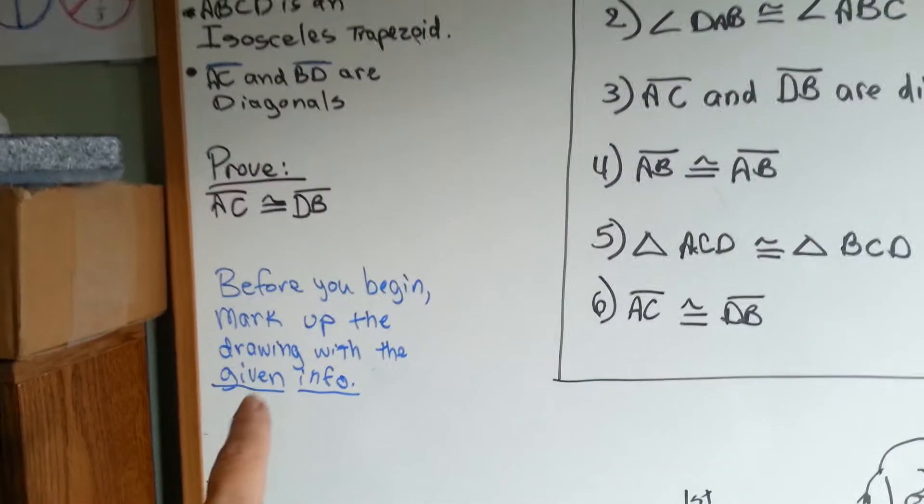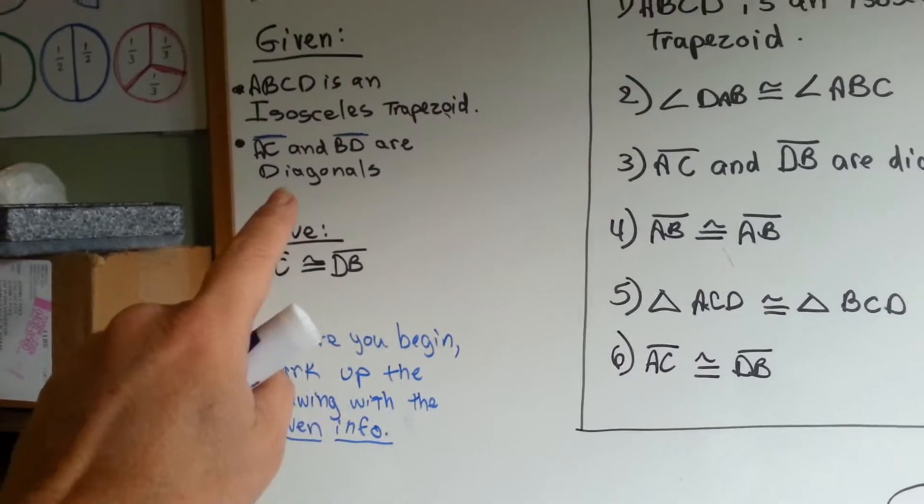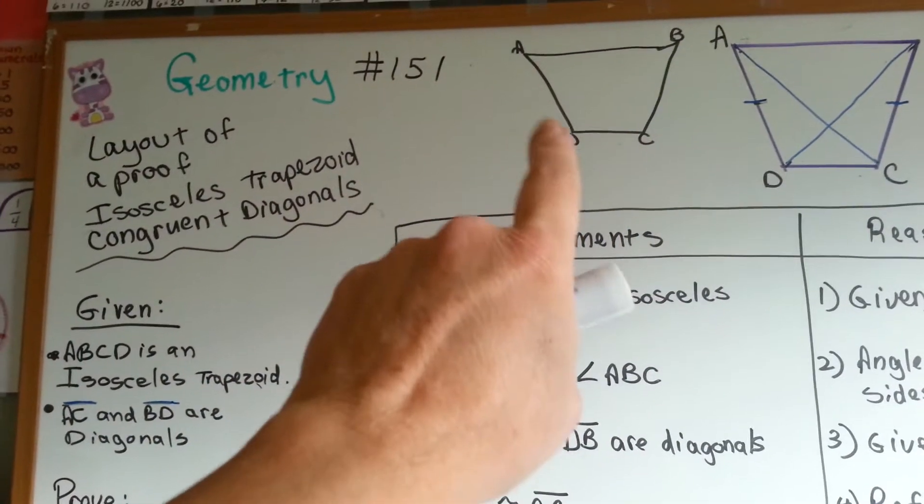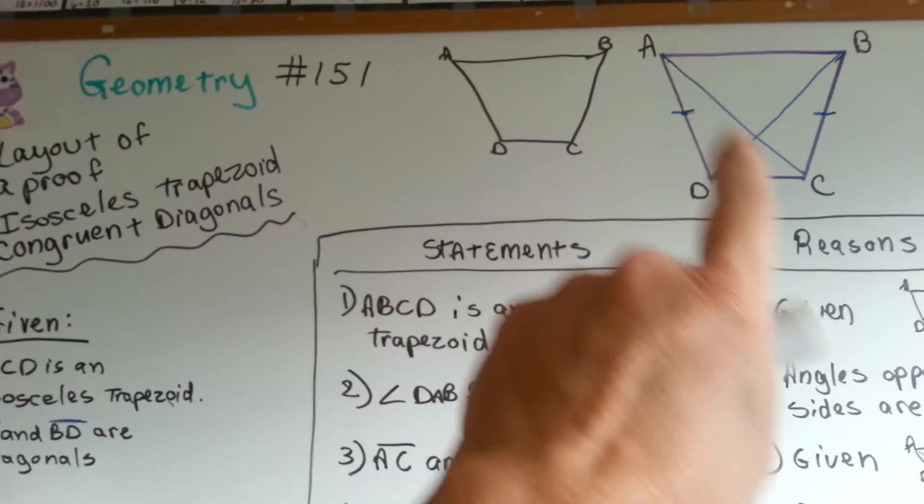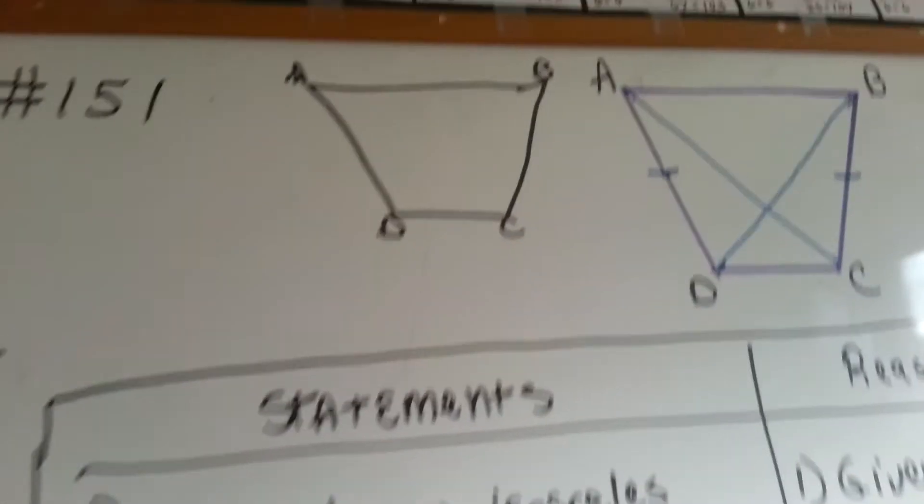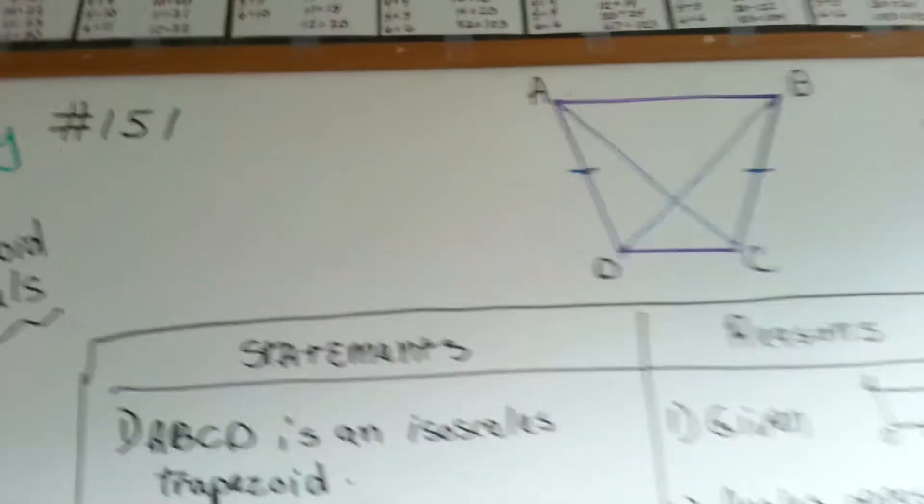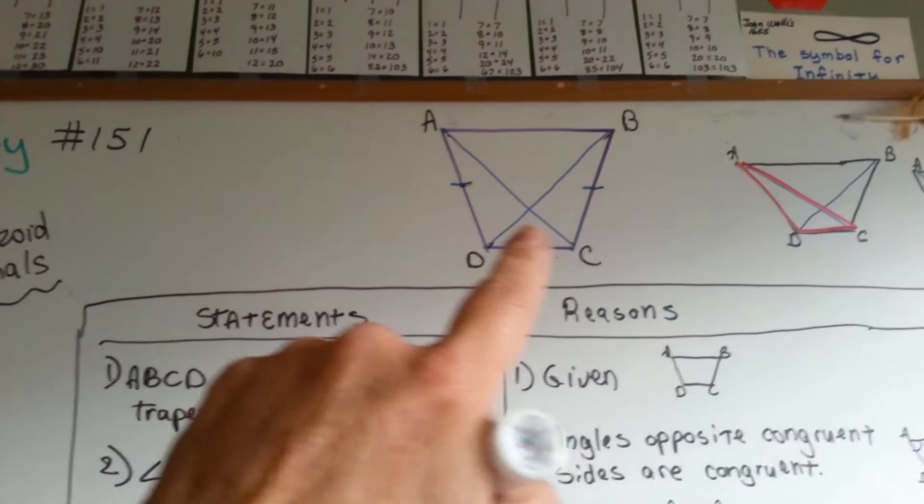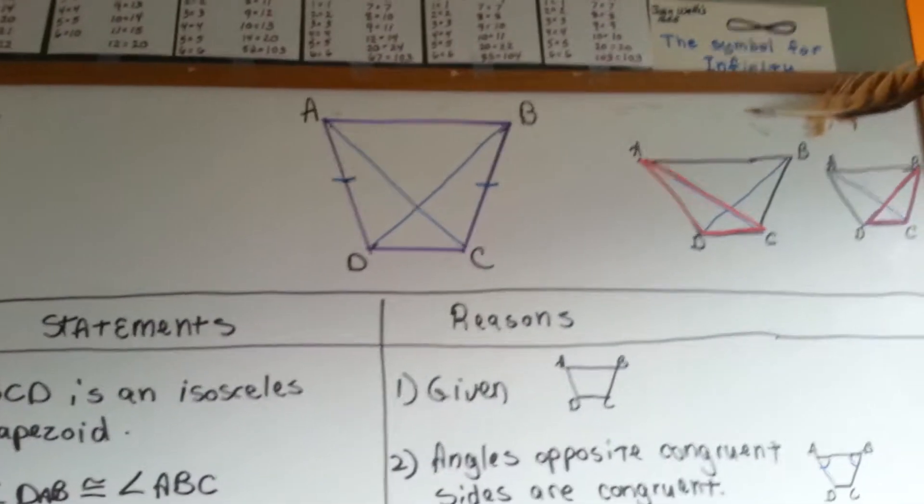Before you begin doing this proof, you need to mark up the drawing with the given info. It was originally like this, and it said AC and BD are diagonals. There's nothing drawn here. You need to do it yourself. Put your diagonals in. So we can get rid of this drawing to free up the board a little bit and not confuse you so much.